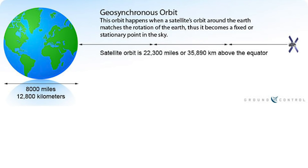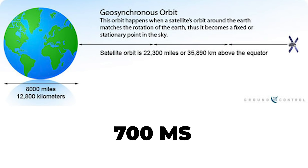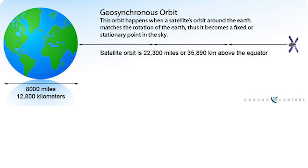Historically, satellites have sent data where they have been fixed over one spot in the sky, called geosynchronous orbit, at roughly 22,200 miles. Being so far away, the latency times have been around 700 milliseconds. Now, with SpaceX satellites about 340 miles in the sky, we are seeing much better latency speeds. These SpaceX satellites have to move faster to stay in orbit, so it's actually impossible for them to stay in one spot.